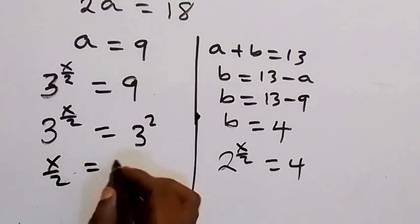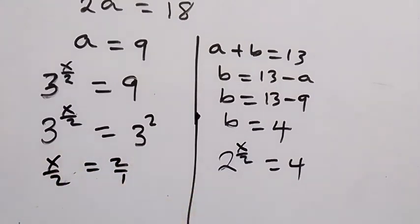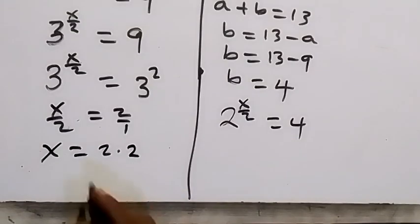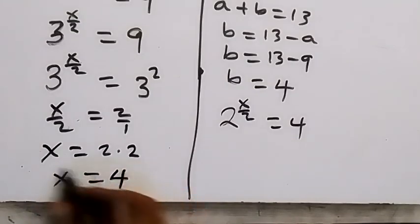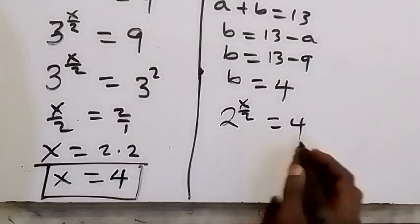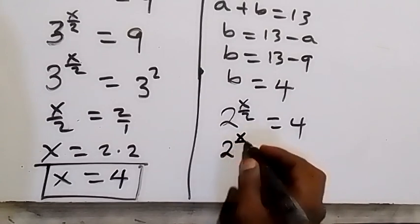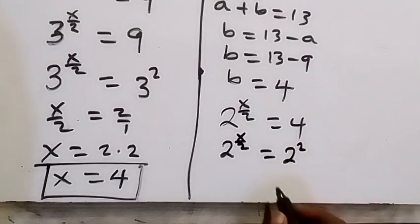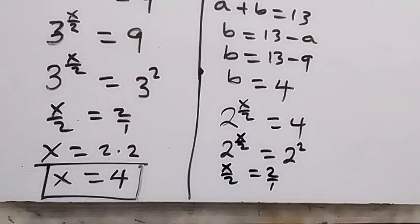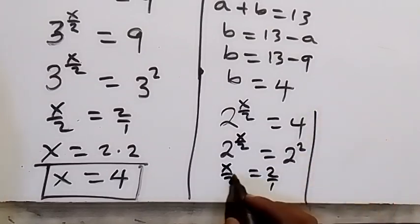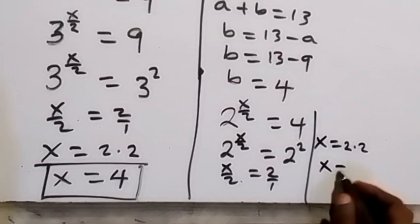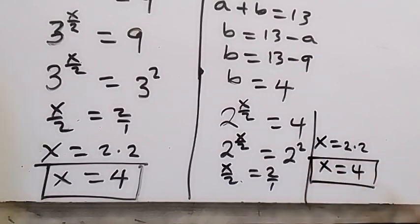Since the bases are the same, we equate the exponents: x over 2 = 2, and cross-multiplying gives x = 4. Checking the other equation: 4 = 2 squared, so 2 raised to power x over 2 equals 2 squared, which also gives x over 2 = 2, therefore x = 4.